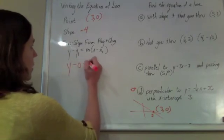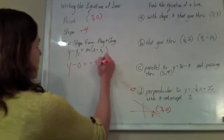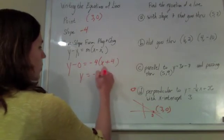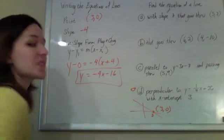y minus 0 equals negative 4 times x plus 4. So, y will equal negative 4x minus 16. And we're set.